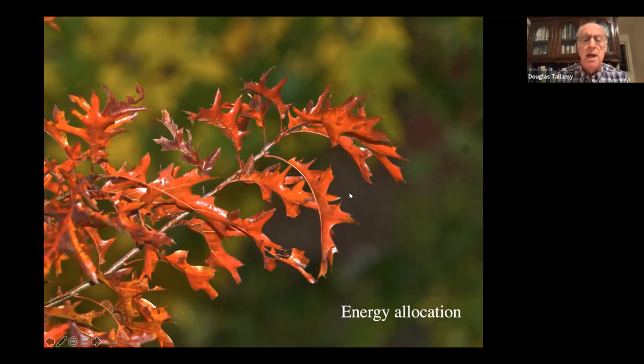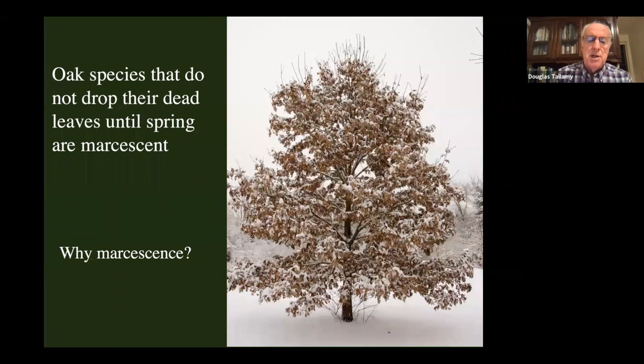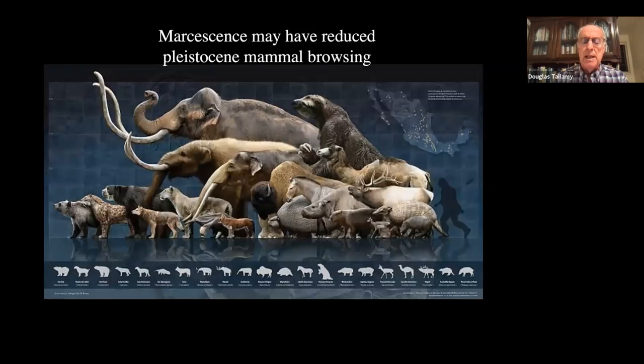In December, you might notice that particularly in the white oak group, many leaves are still on the tree. It's a deciduous tree — why didn't it drop its leaves? That condition is called marcescence, where the leaves are held all winter long. It's much more common on young trees and the lower branches.